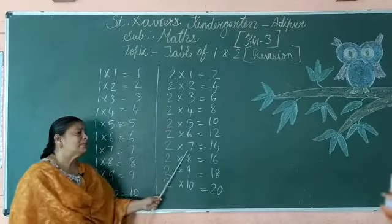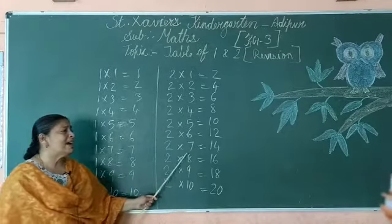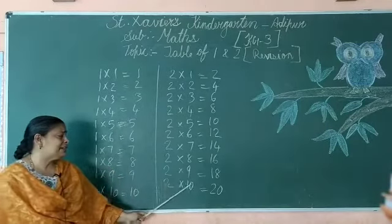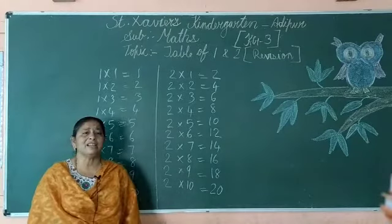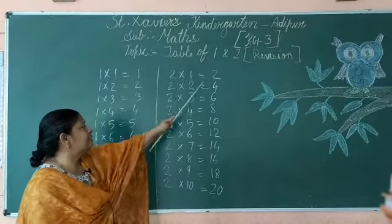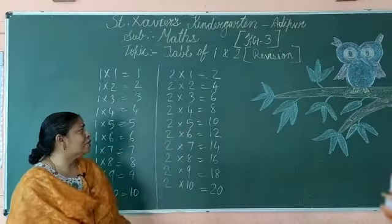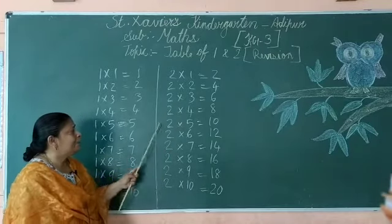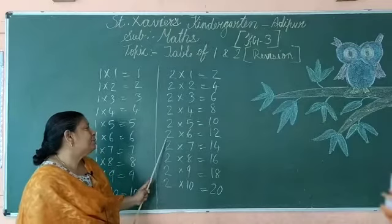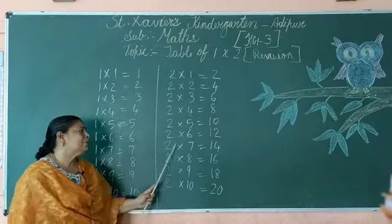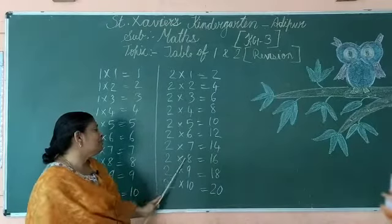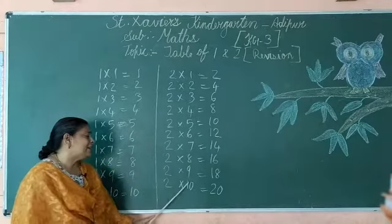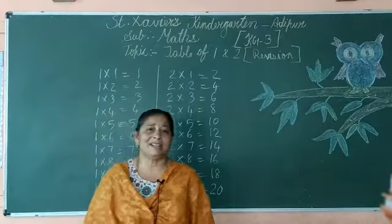Two six's are twelve, two seven's are fourteen, two eight's are sixteen, two nine's are eighteen, two ten's are twenty. Now children, I hope you all understood this.